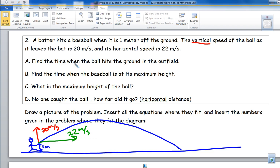So find the time when the ball hits the ground in the outfield. We want to know what is the time t way out here. You have to solve the vertical y equals negative one half ag t squared plus v naught t plus y naught.